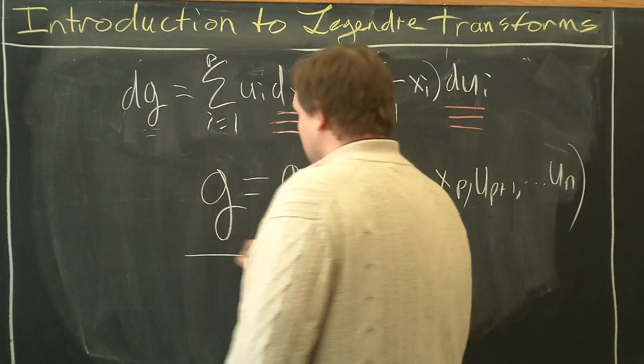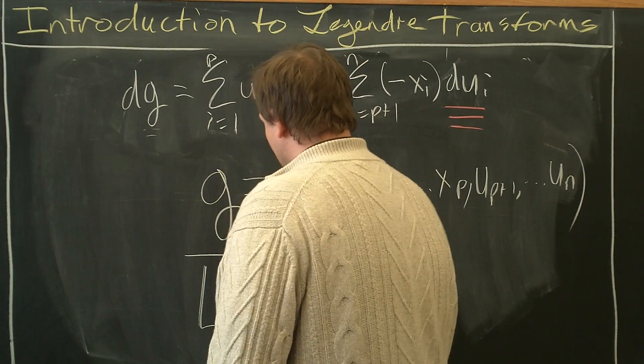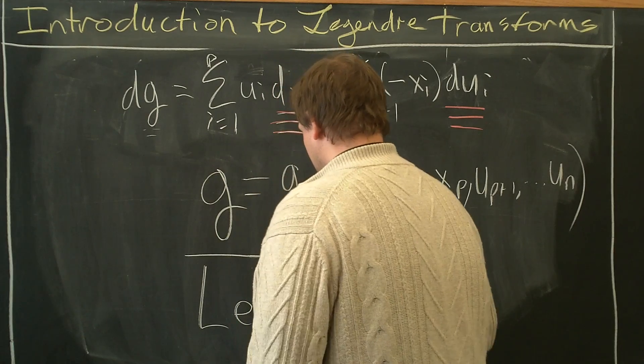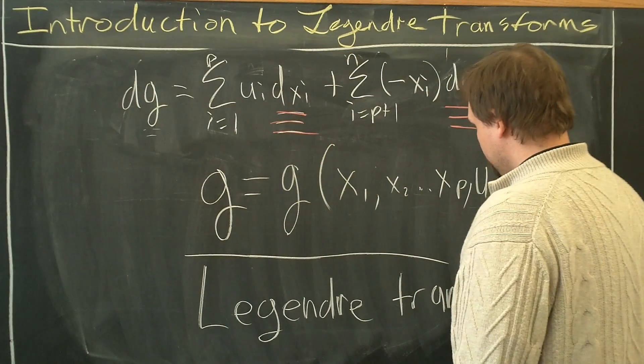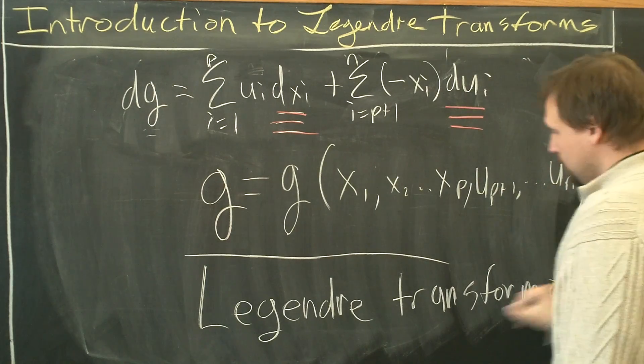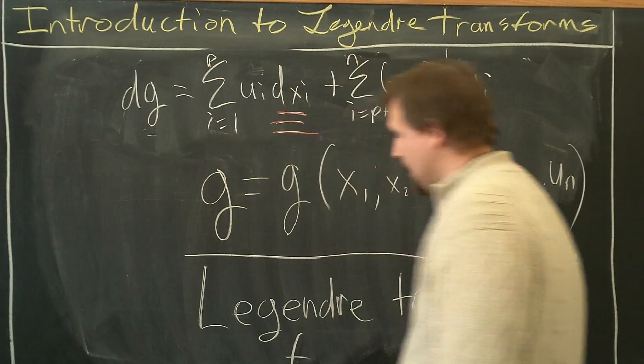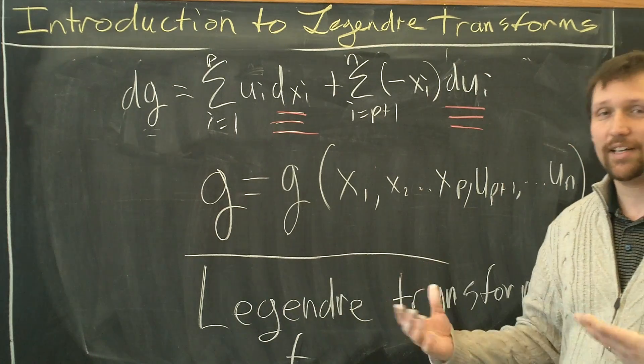g is the Legendre transform of the original function f. And so now we have this new function g that depends on new variables.